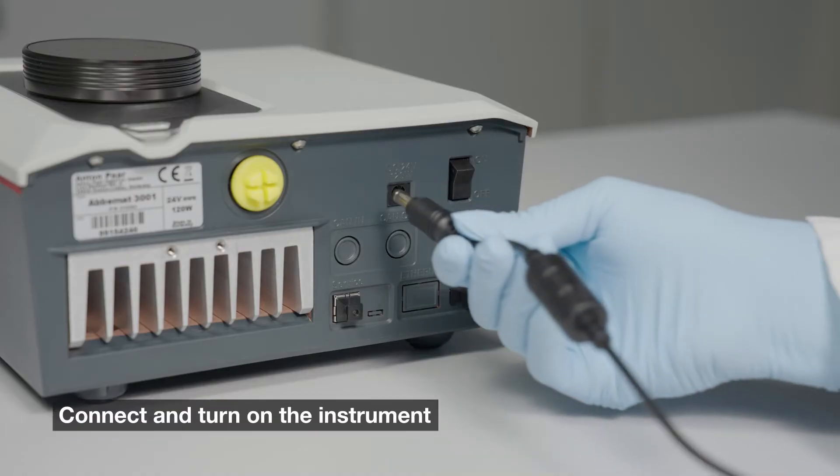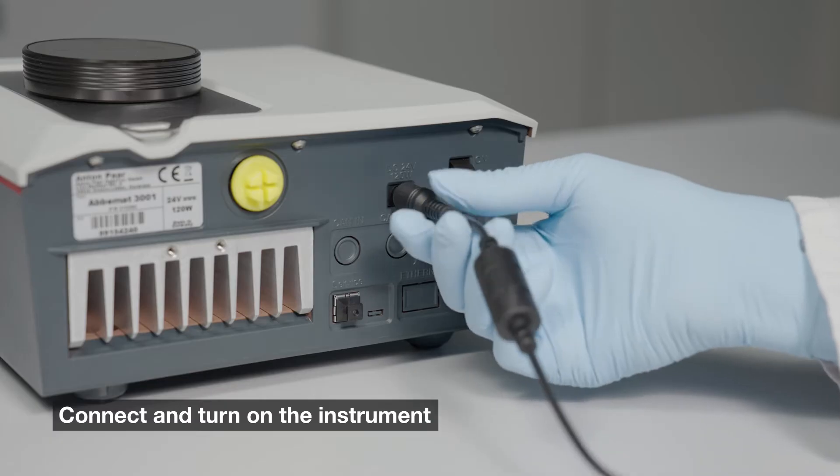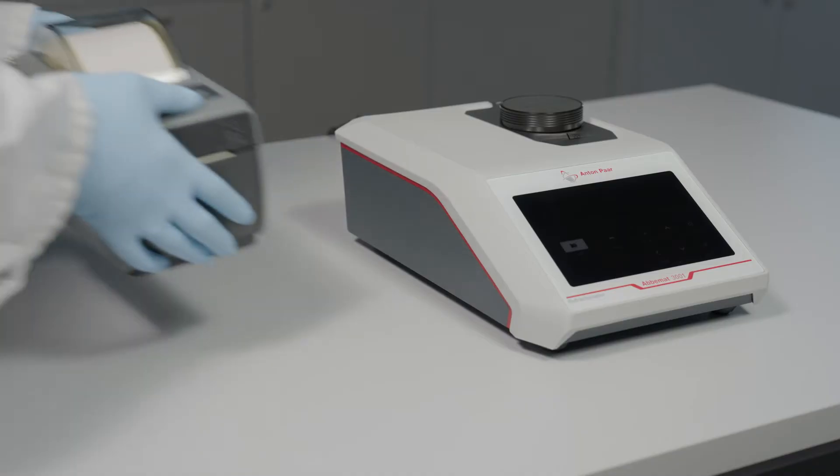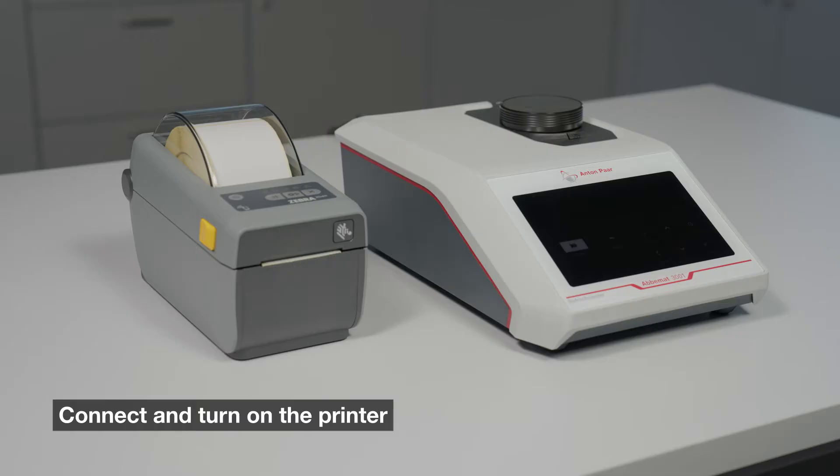Connect the external power supply to the instrument and plug the power supply into a mains outlet. Ensure the power switch on the rear of the instrument is off while connecting. Connect and turn on the optional label printer.